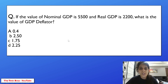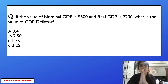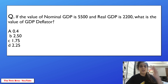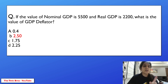If the value of nominal GDP is 5500 and real GDP is 2200, what is the value of GDP deflator? The GDP deflator formula is: nominal GDP divided by real GDP multiplied by 100. So 5500 divided by 2200 into 100 gives 250. This is an important formula — note it down as it will come in the exam.